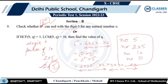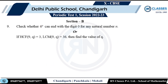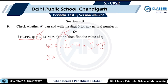Next part: HCF is given as 3 and LCM is given as 36; find the value of q. Using the relation: HCF × LCM = product of the two numbers. So 3 × 36 = 9 × q. Evaluating gives q = 12.